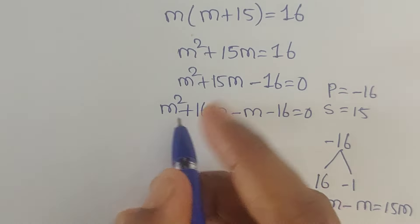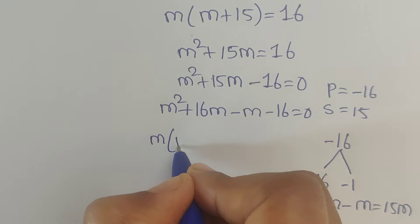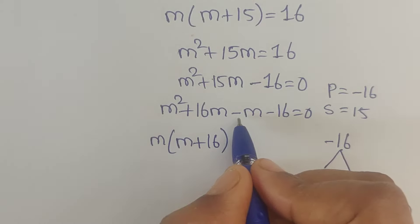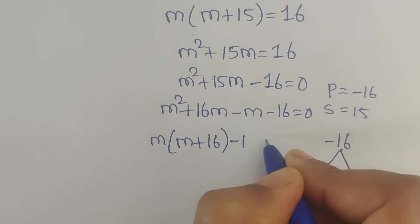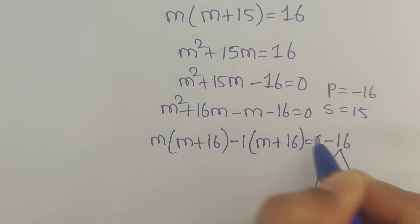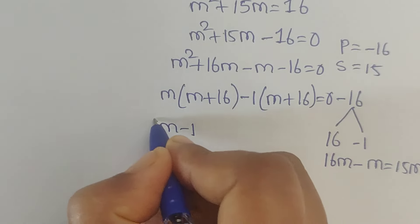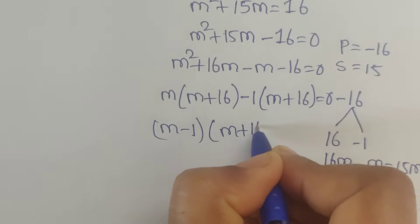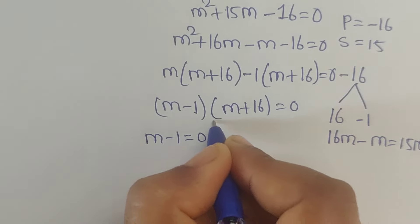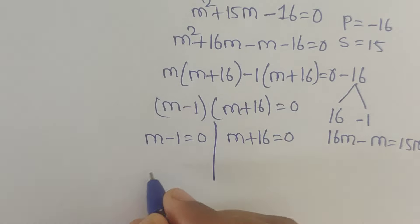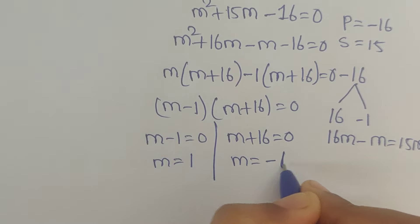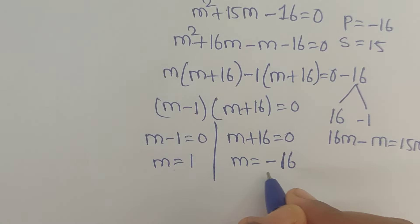In the first two terms the common factor is m, giving m(m plus 16). So we write m(m plus 16) minus 1(m plus 16) equals 0, which gives (m minus 1)(m plus 16) equals 0. Splitting into two parts: m minus 1 equals 0 gives m equals 1, and m plus 16 equals 0 gives m equals minus 16.